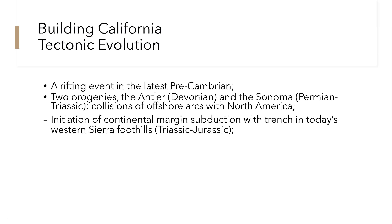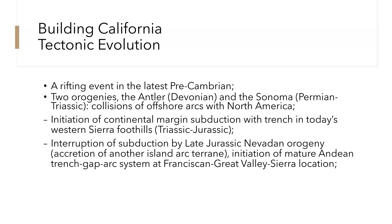We see the initiation of the continental margin subduction with a trench in today's western Sierra foothills. Then we have the interruption of subduction by the late Jurassic Nevadian Orogeny and the accretion of another island arc terrain. Then we have initiation of a mature Andean trench-gap arc system of the Franciscan Great Valley sequence Sierra location.